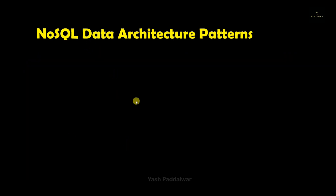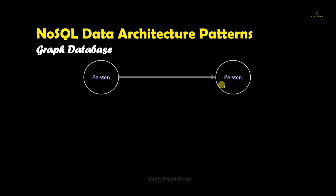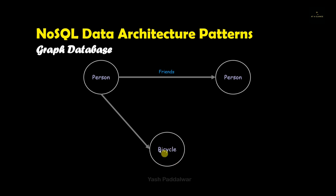Graph database is widely used in the social network domain. For example, let's say we have our first node, termed as 'person'. Let's include one more node of 'person', so in all we have two person nodes. The relationship between these two nodes is defined by an edge which states the first person is the friend of the second person. Now let's include one more node, 'bicycle', which is connected to the first person, with the relationship that person one owns this bicycle. Then we connect person two with the bicycle node, with the relationship that person two is driving this bicycle. You can see how we have established the relationship between these three nodes: person one and person two are friends, person one owns the bicycle, and person two is driving it.